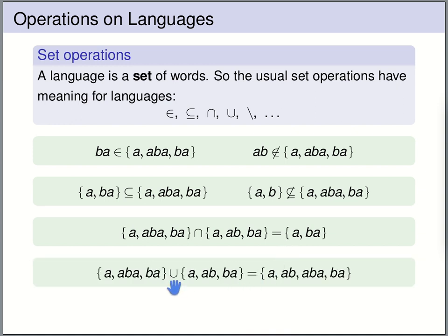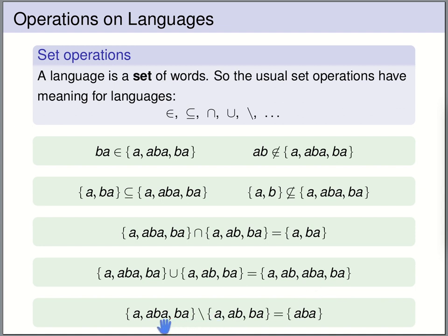The union takes all elements of either set: a, aba, ba, ab — giving four words in total. The difference of two sets consists of all elements of the first set that do not appear in the second set. So a and ba appear in the second set and are not in the difference, but aba does not appear in the second set, therefore aba is in the difference of these two languages.